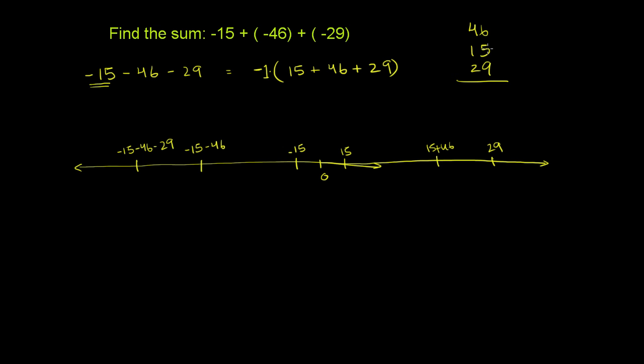6 plus 5 is 11, plus 9 is 20. Carry the 2. 2 plus 4 is 6. 6 plus 1 is 7. 7 plus 2 is 9. So this is 90.